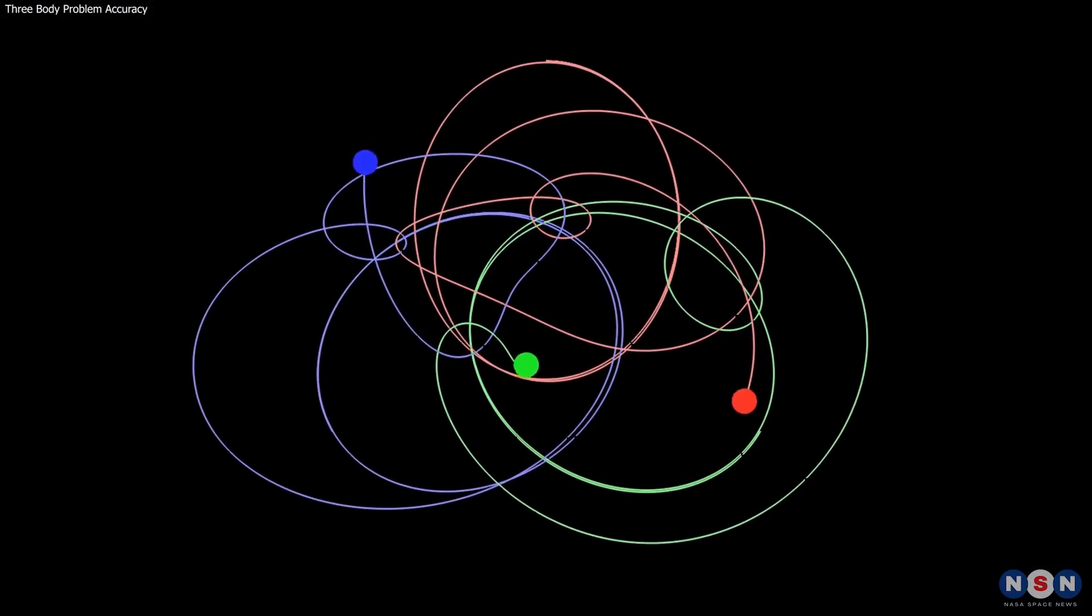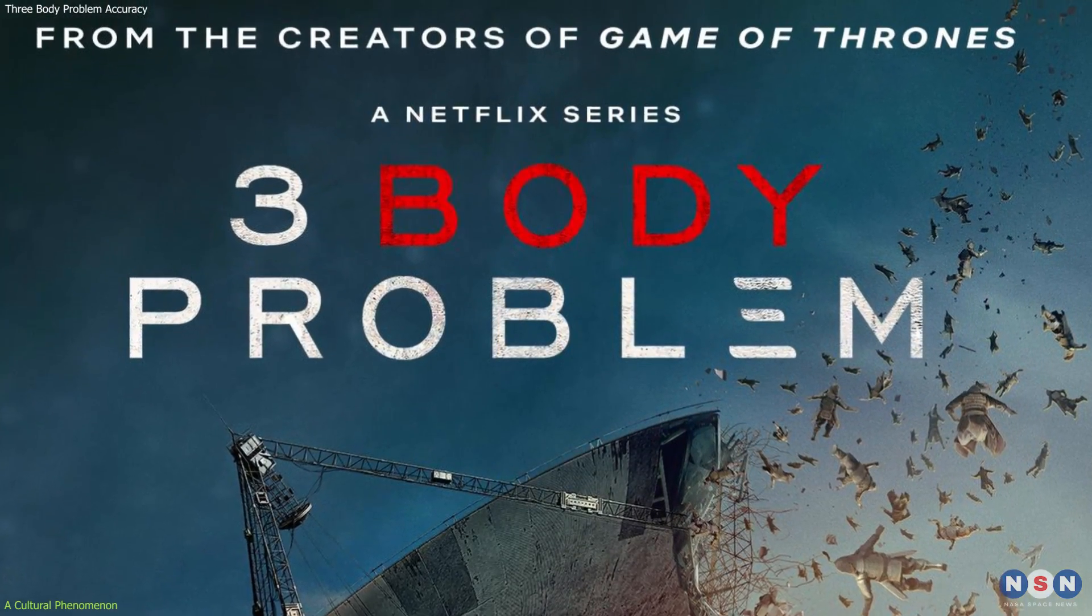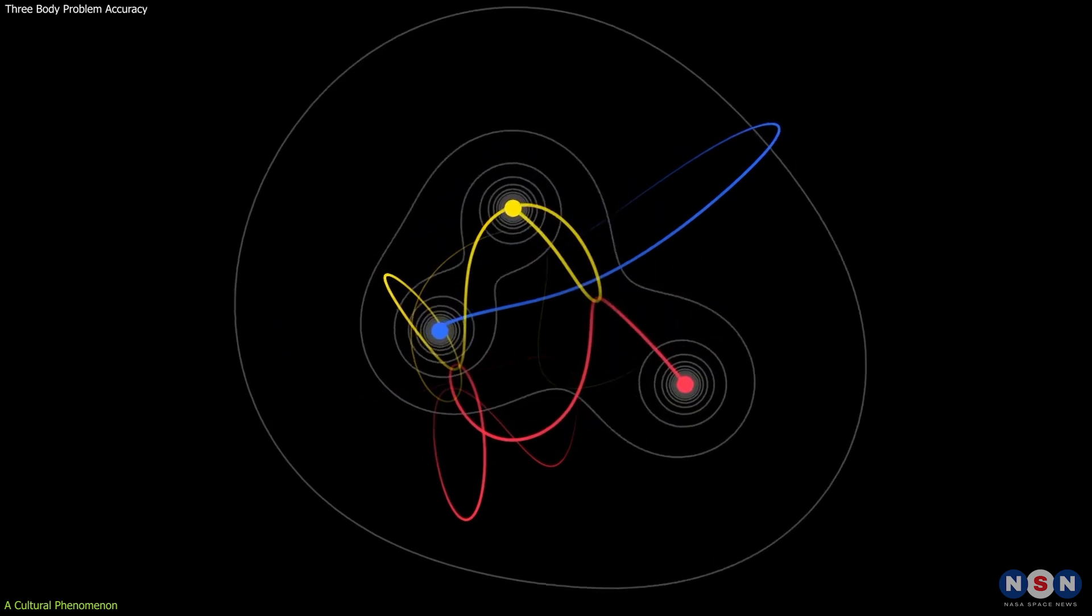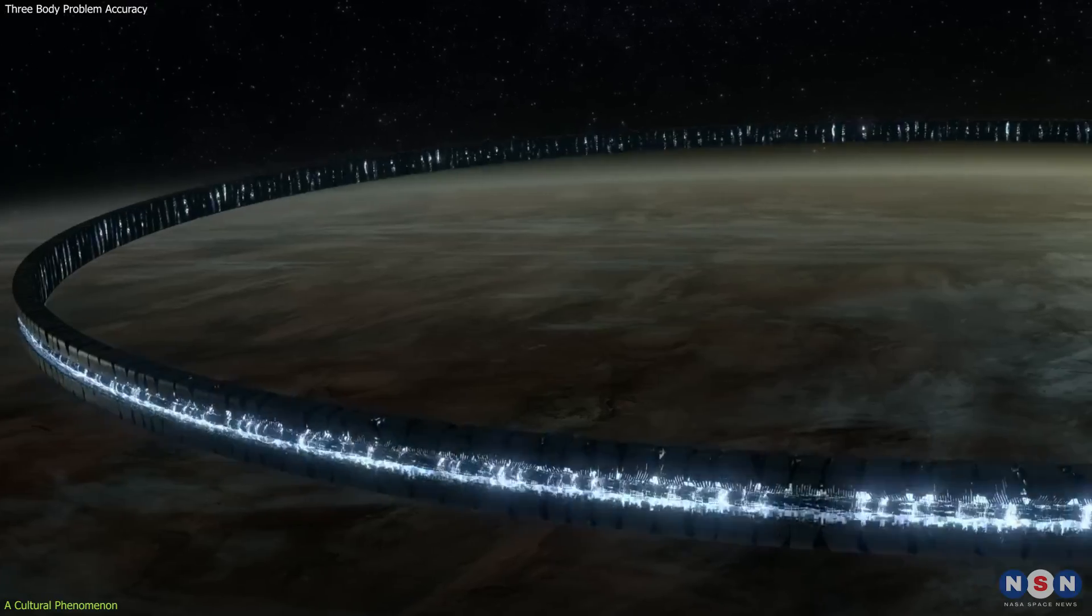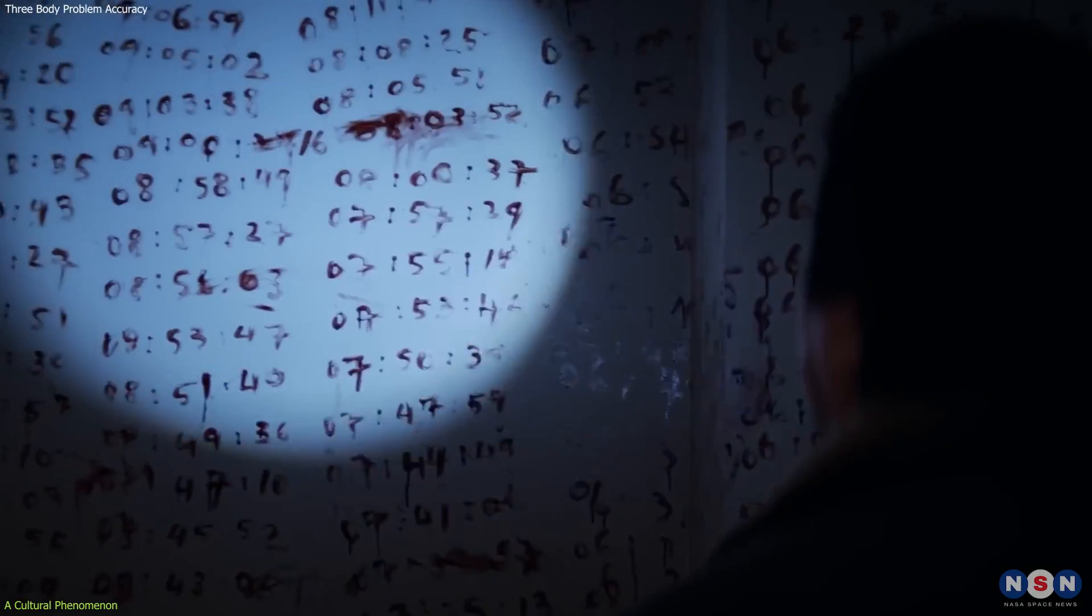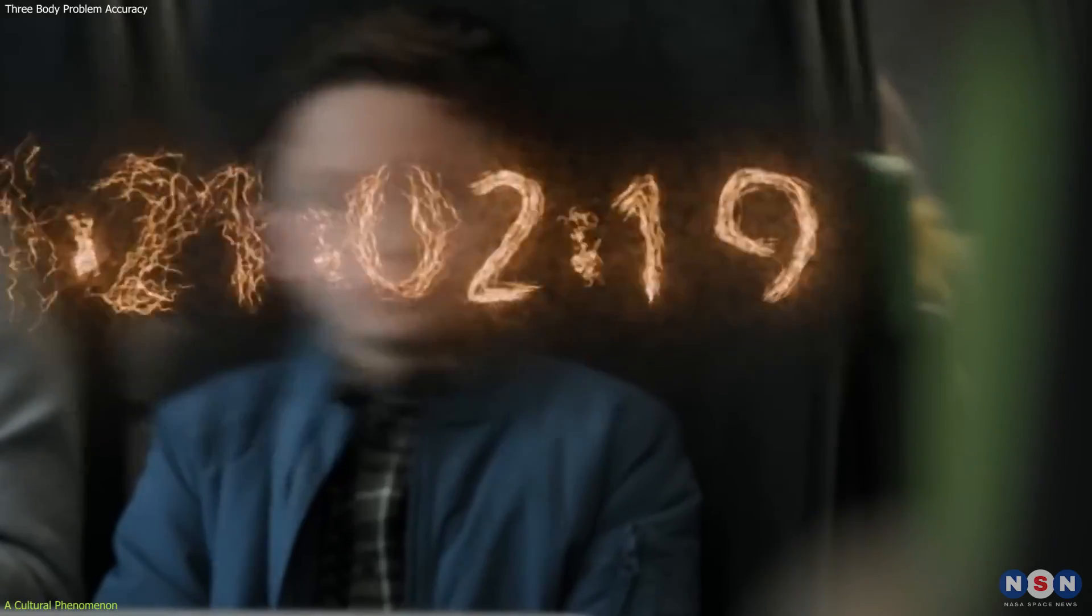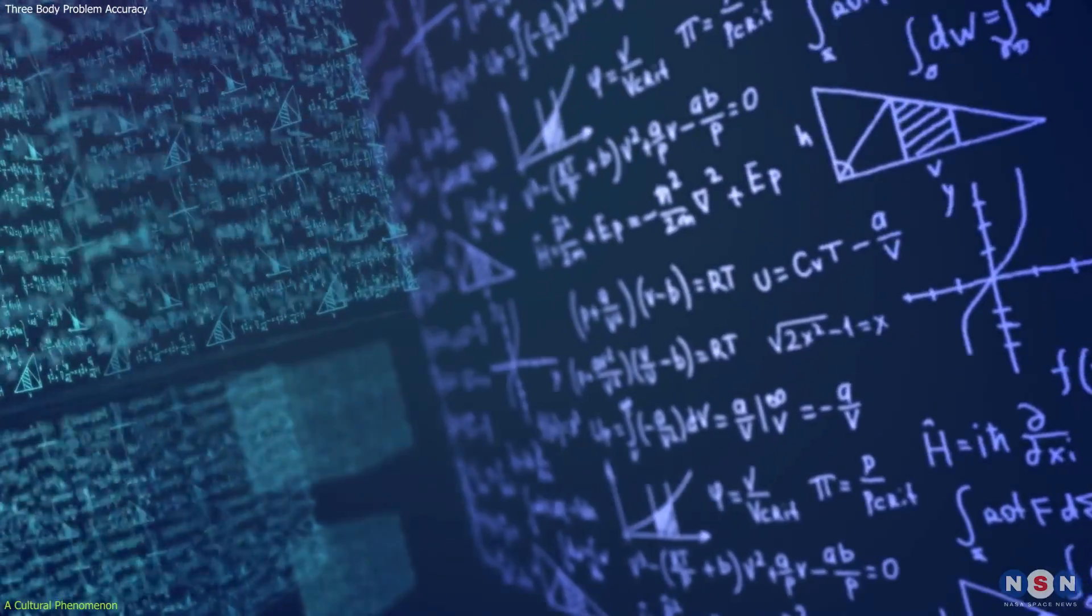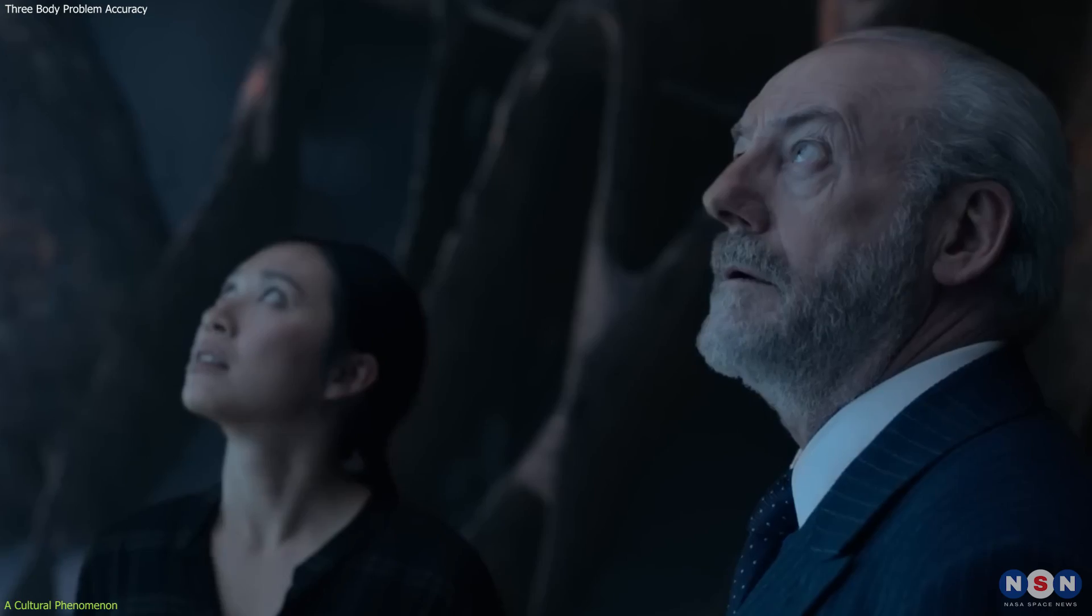The three-body problem's leap from academic journals to mainstream media, particularly through its adaptation into a Netflix series based on Liu Cixin's novel, has transformed it from a scientific challenge into a cultural phenomenon. This transition illustrates how complex scientific ideas can be effectively communicated to the public through storytelling and entertainment. The series uses the three-body problem not just as a plot device, but as a central theme, intertwining it with human stories and larger existential questions. It brings the abstract and often inaccessible world of theoretical physics into the realm of public discourse, sparking curiosity and fascination about a topic that many might otherwise find daunting.